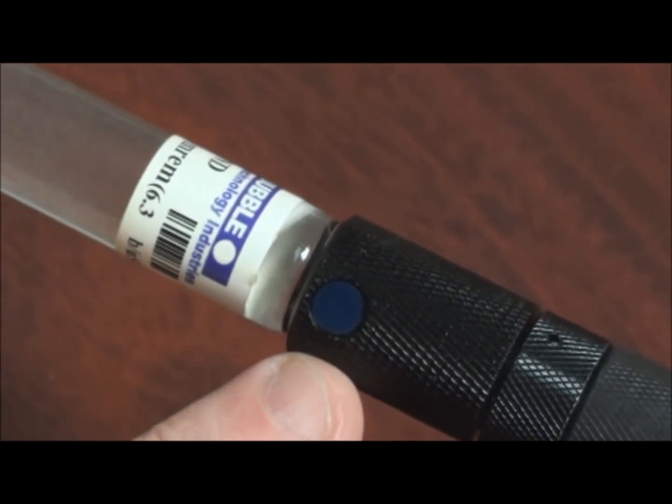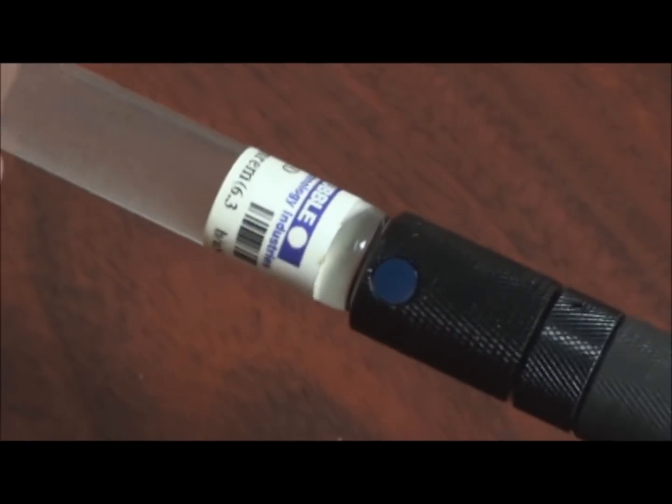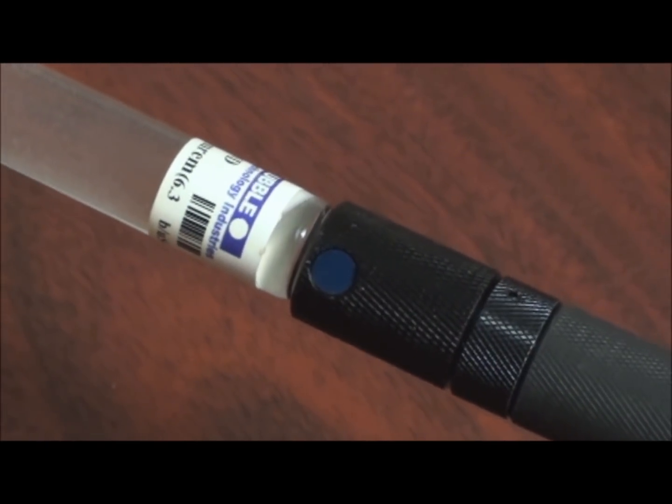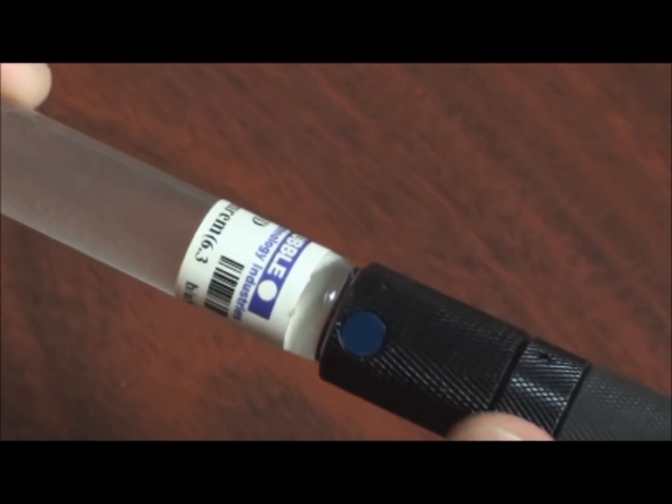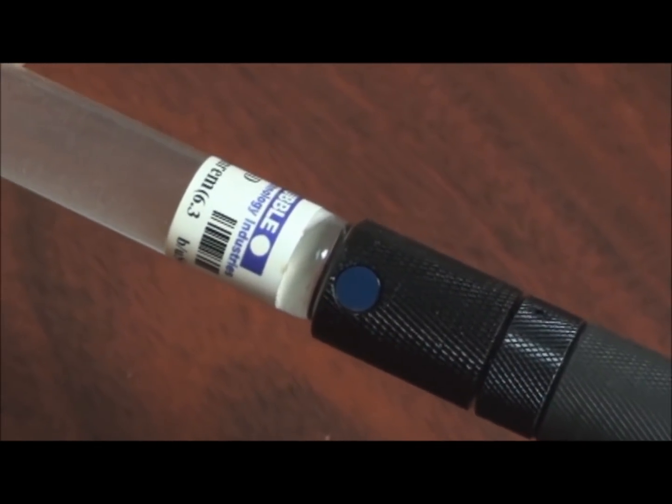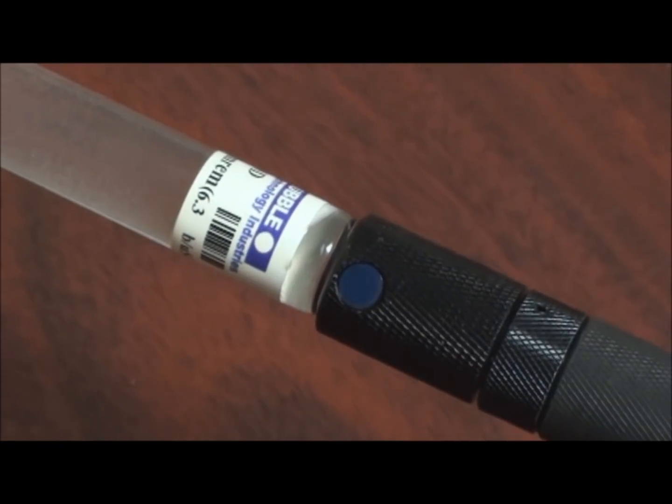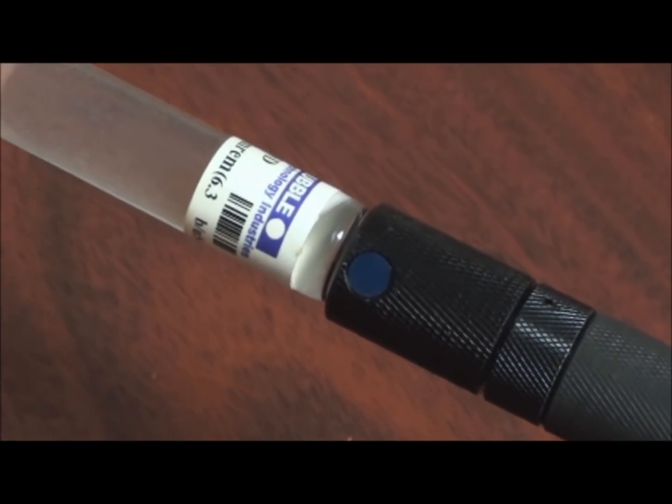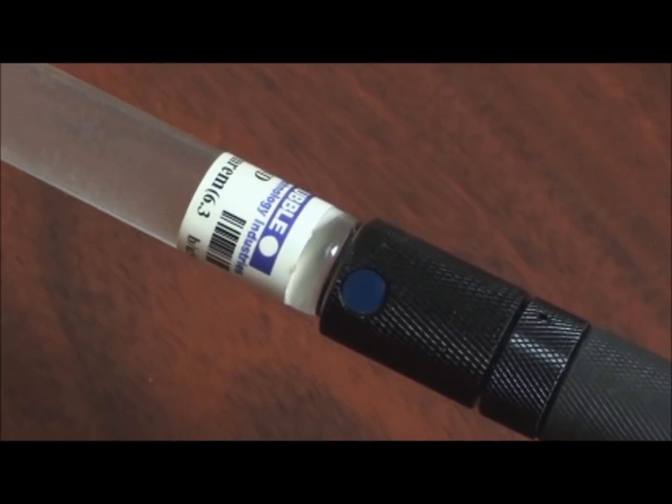This disc here is the thermometer for the unit. The operating range for these is between 20 and 37 degrees Celsius. As long as that disc is any color other than black, then the unit is ready to be used. But you should not use it if it is less than 20 or more than 37 degrees.